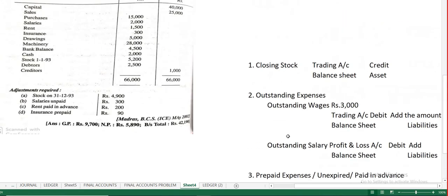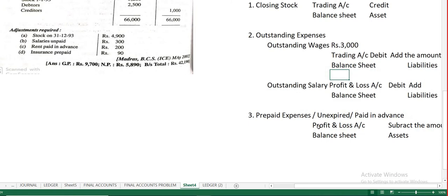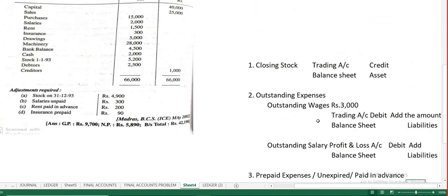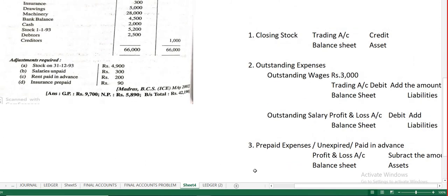To summarize so far: closing stock — trading account credit side and balance sheet asset side. Outstanding expenses — add to the relevant account (trading for wages, P&L for salary/rent) and balance sheet liability/current liabilities. Prepaid expenses — subtract in profit and loss account, and show under balance sheet asset side. Outstanding means add; prepaid means subtract.